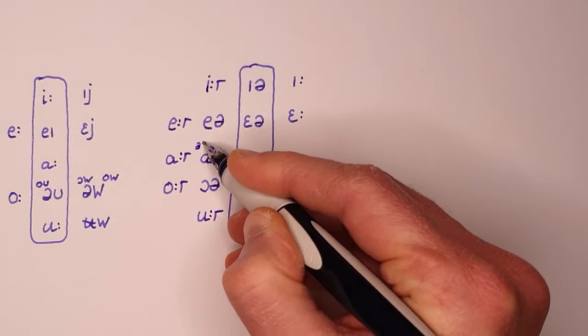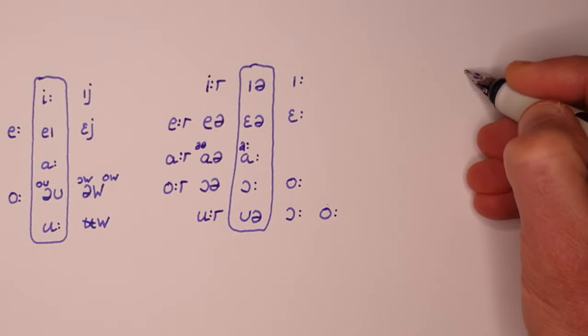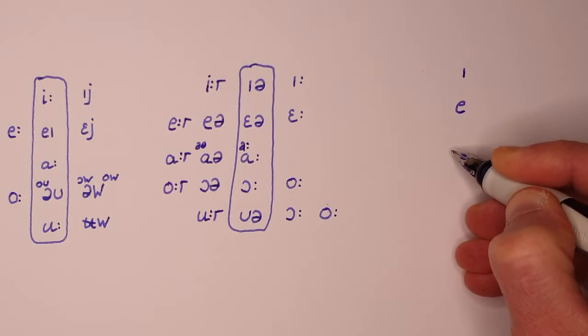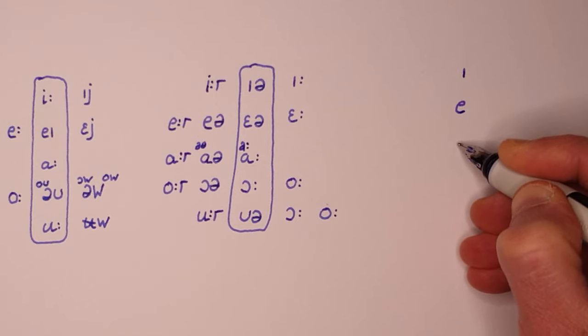The short vowels of kit, dress and foot were already introduced as elements of the diphthongs in face and goat.